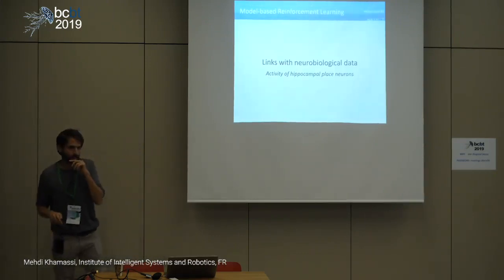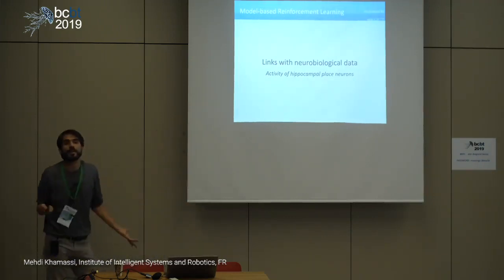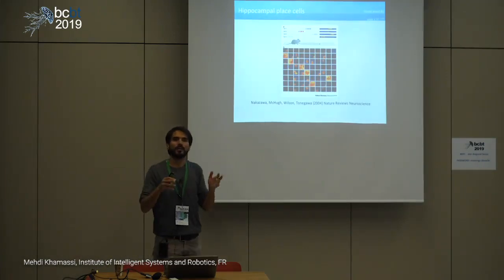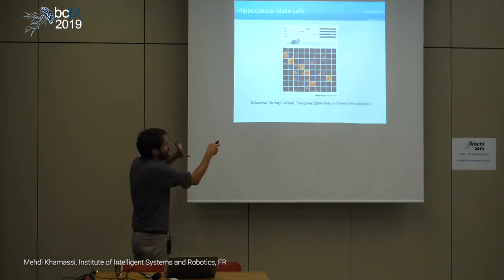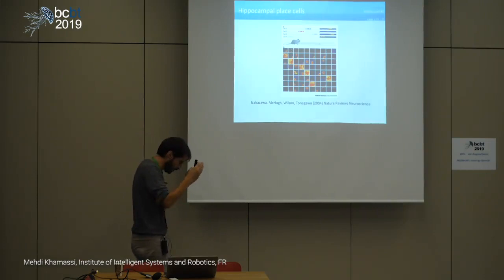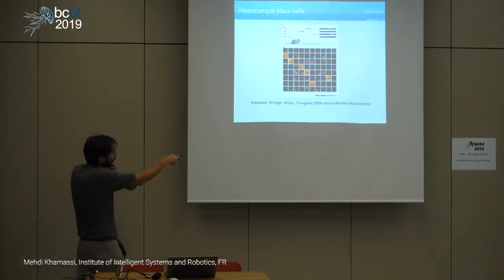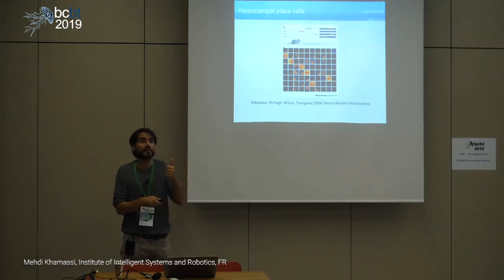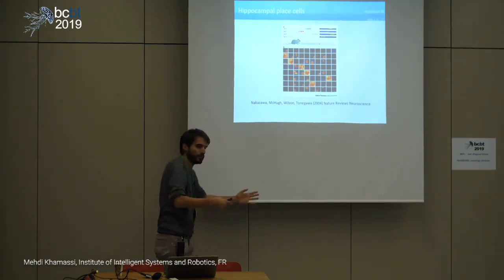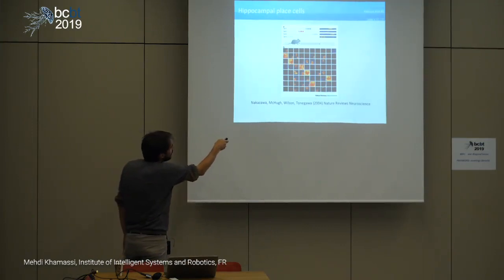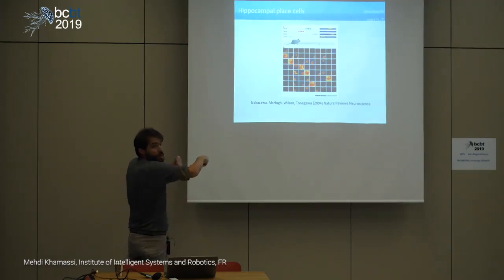Let's get back to neurobiological data, and in particular the hippocampus. Hippocampal place cells are neurons that respond to the current location of the animal. You see an example of four neurons illustrated when the animal is running on a track — this neuron responds only at one position and not others. You have other neurons for other positions. As a population, they encode special spatial information.